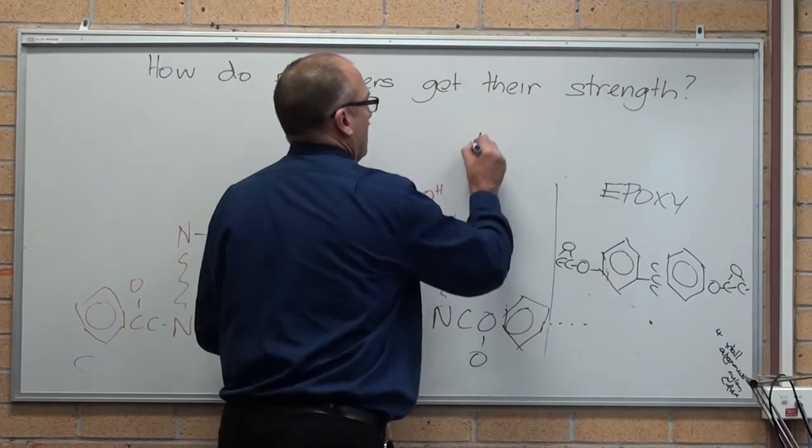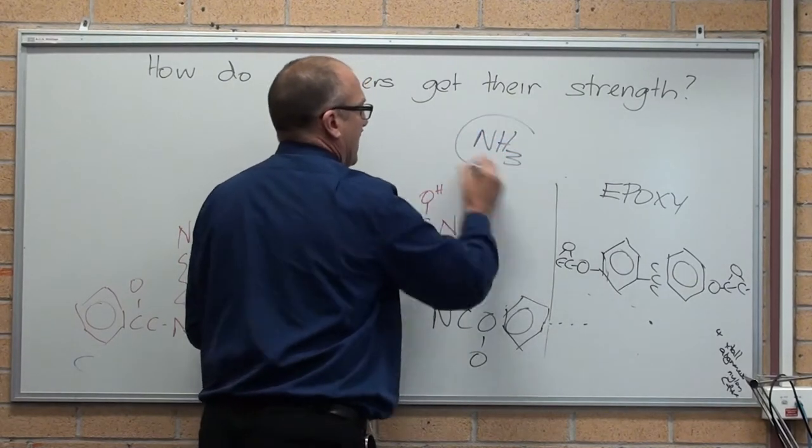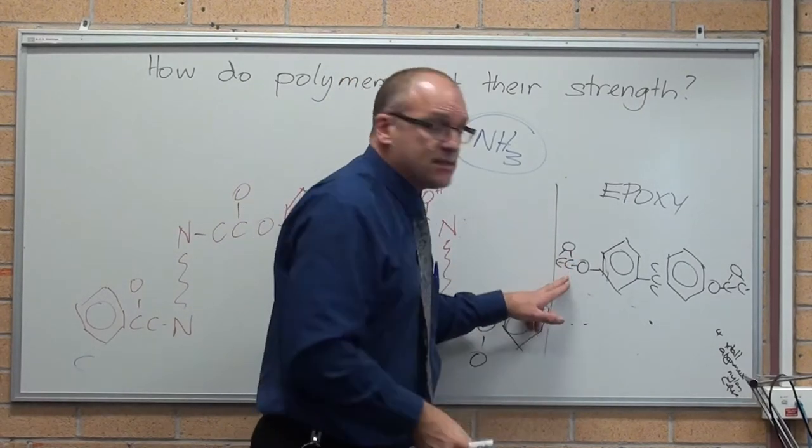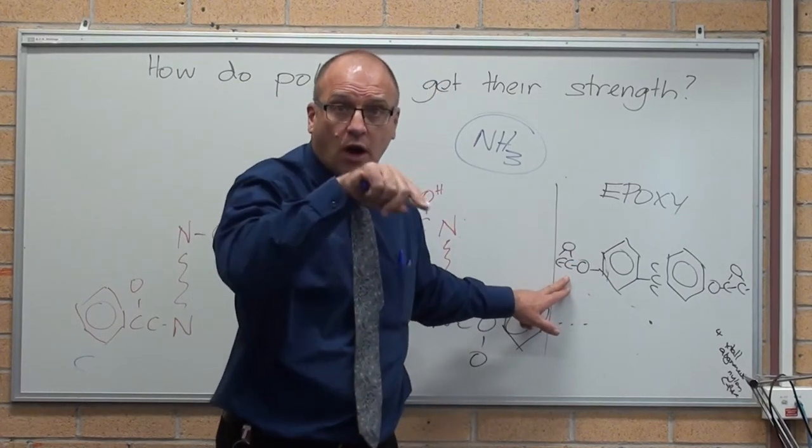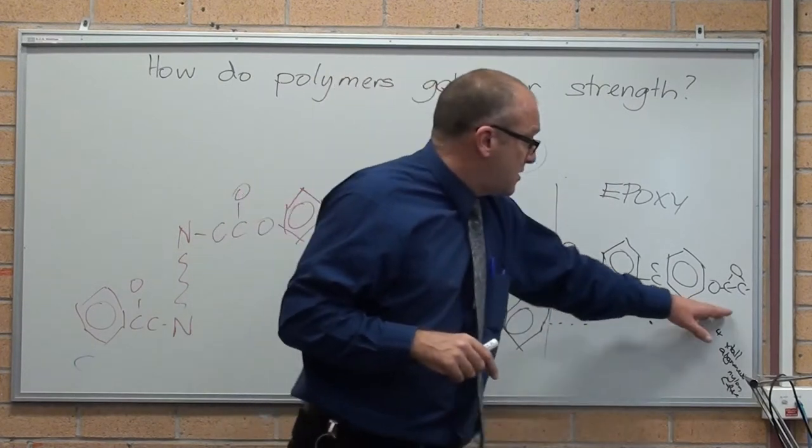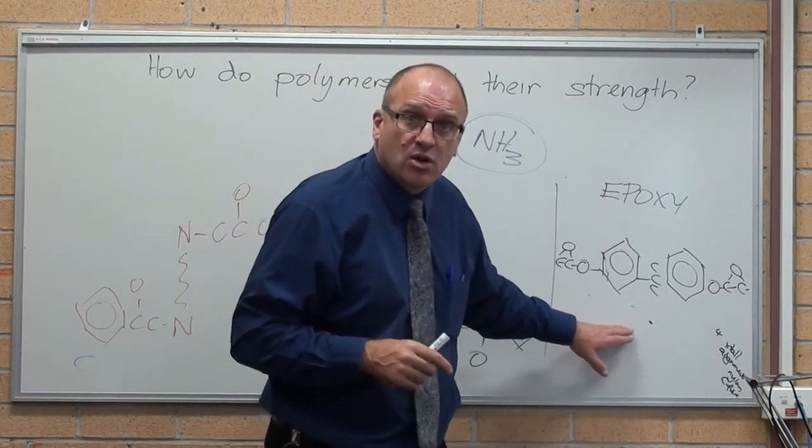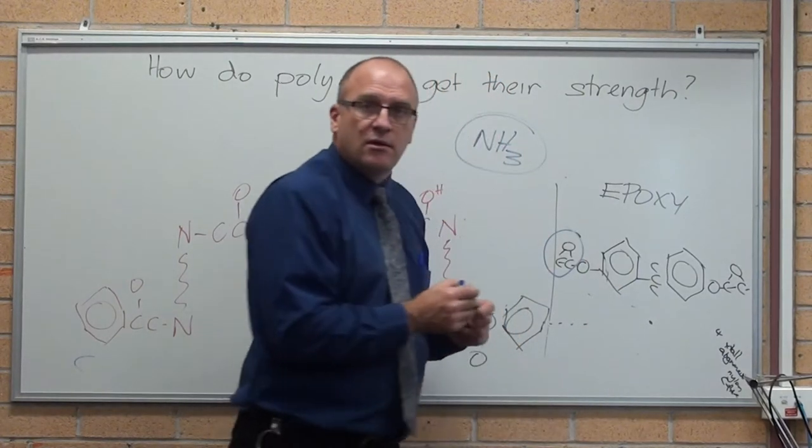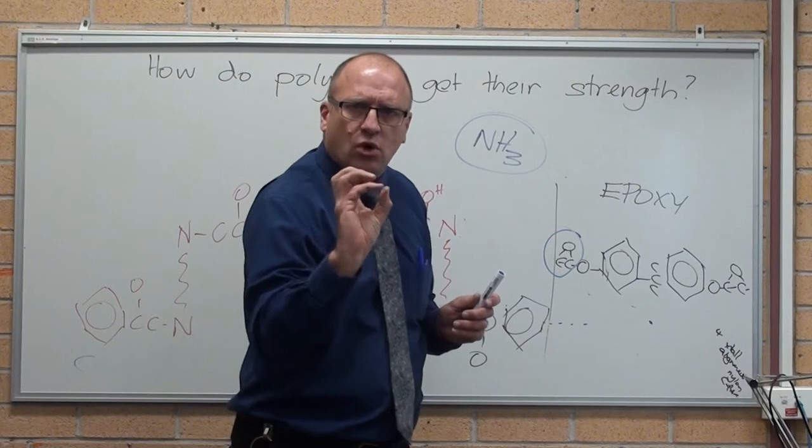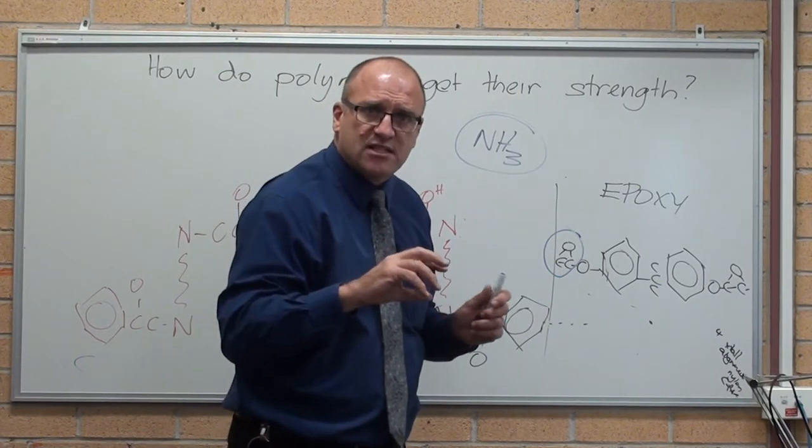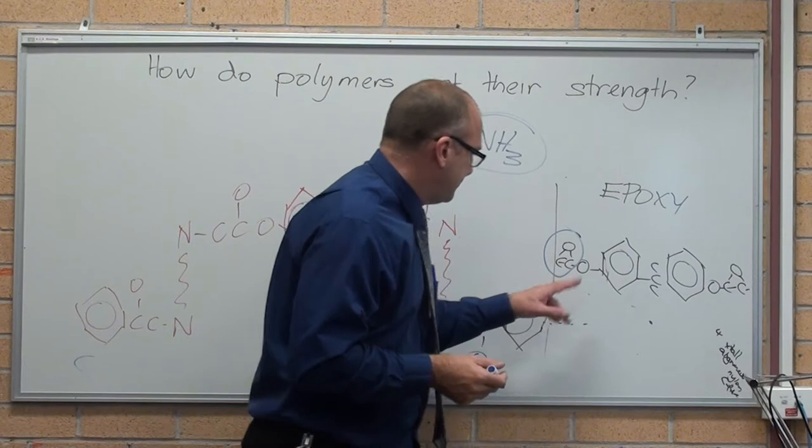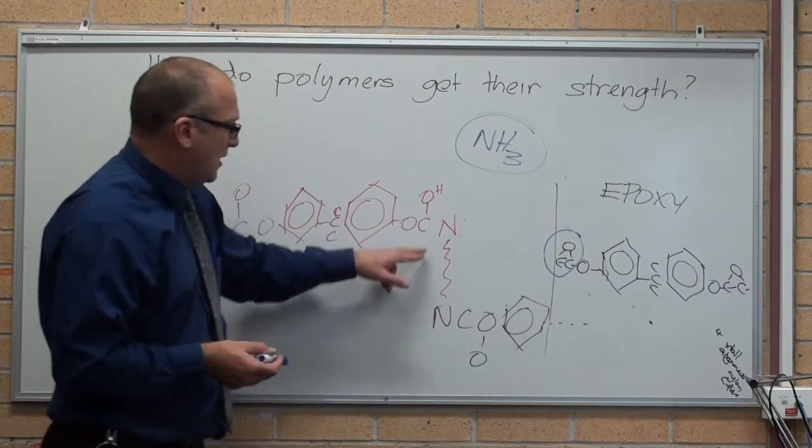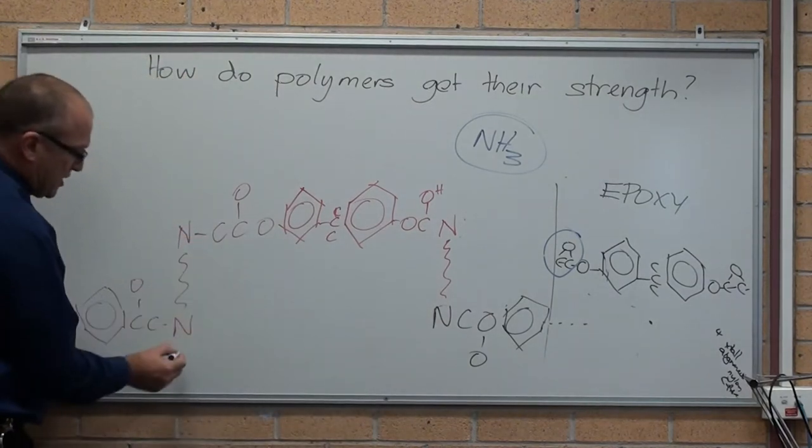Amines are ammonia-based. That's the epoxy structure. The reactive part of it is that carbon-carbon oxygen triangle at the end. This is a standard bisphenol epoxy, a very common epoxy resin. The epoxy is that. That bond is called, or that chemical structure is an epoxy. So, when I add ammonia to it, it breaks that down and it basically forms little nitrogen chains.